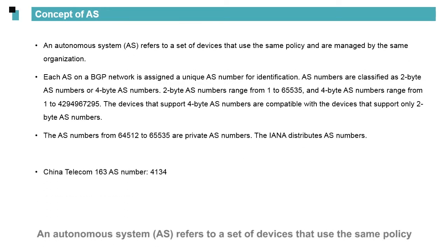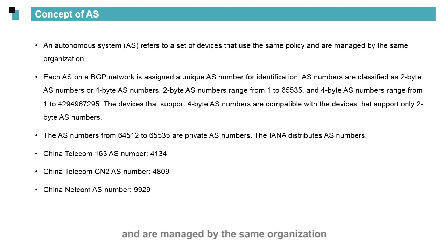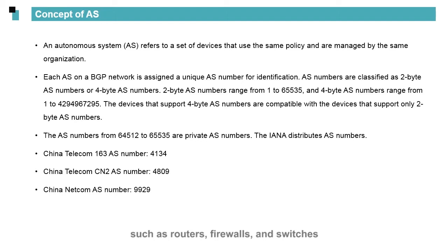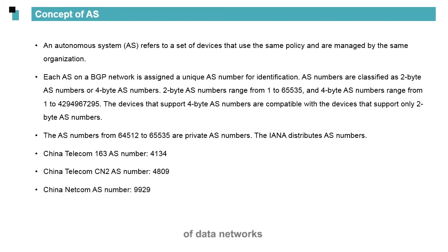An autonomous system, AS, refers to a set of devices that use the same policy and are managed by the same organization. For example, Company A has a data network that consists of various types of devices, such as routers, firewalls, and switches. All these devices reside in the same AS. An IGP, such as OSPF, is used in an AS to implement data communication.